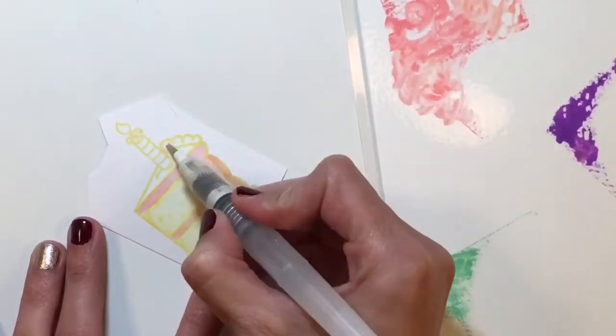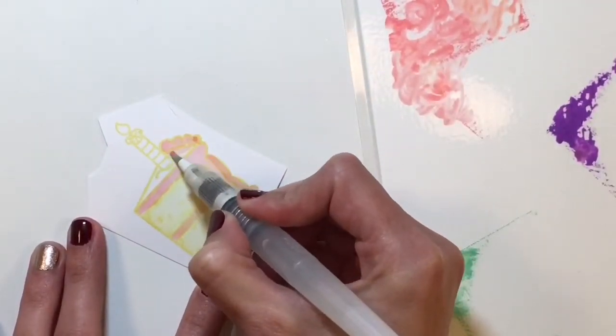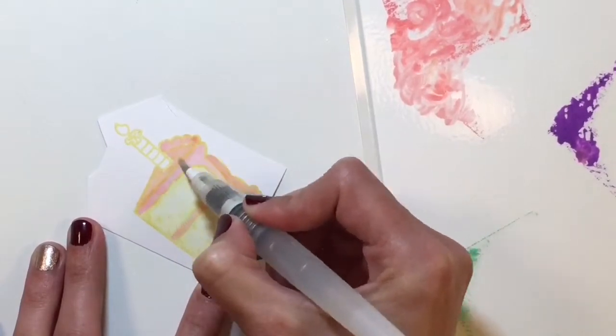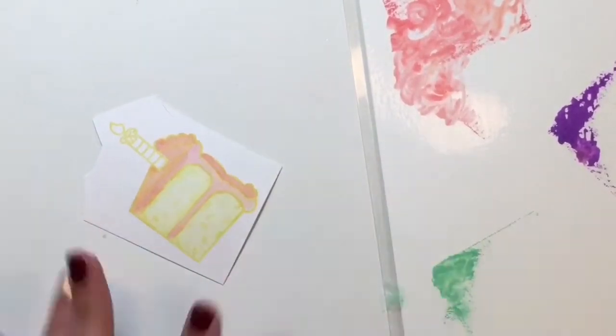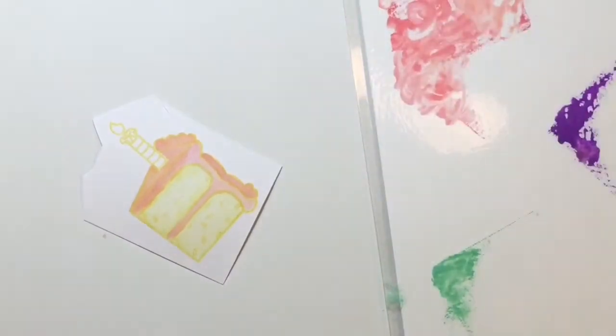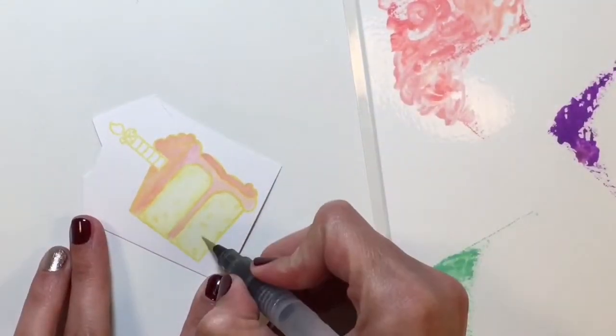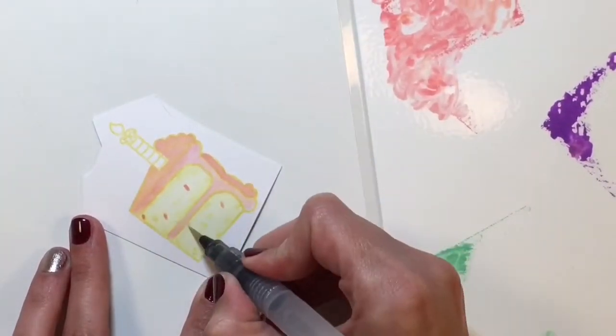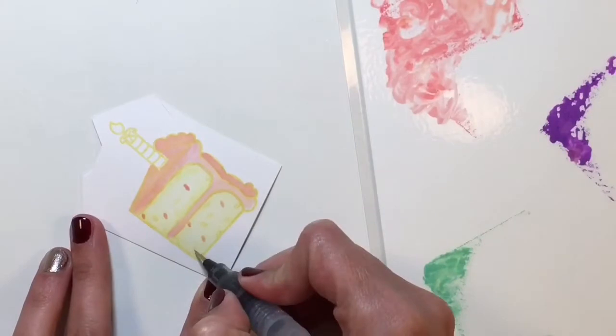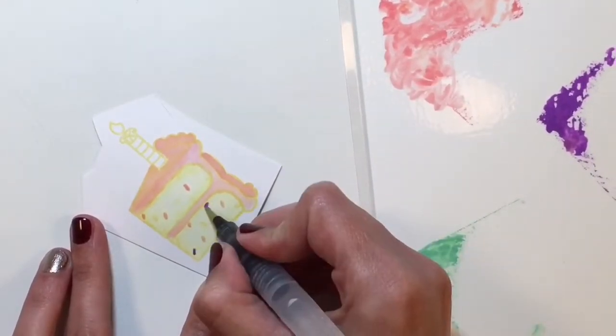I also stamped off to the side some different colors of distress oxides and brought those colors in to color in this piece of cake. That just gives me a kind of no line water coloring effect. It doesn't give you the harsh black lines, so I decided to give it a nice soft effect this way instead of stamping in the dark black ink.